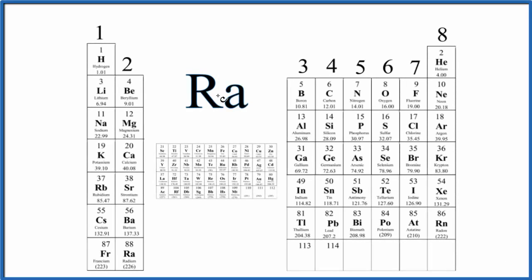In this video, we'll write the Lewis structure for Ra, radium. The first thing we need to do when we write Lewis structures is determine how many valence electrons we have for Ra.